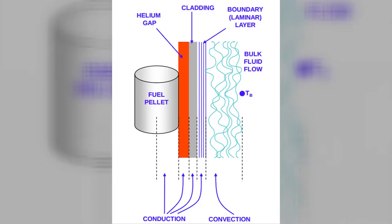You'll see that this week. The fuel pellet transfers heat through the helium gap to the fuel cladding and then to the laminar boundary layer, the coolant, then to the bulk coolant flow.